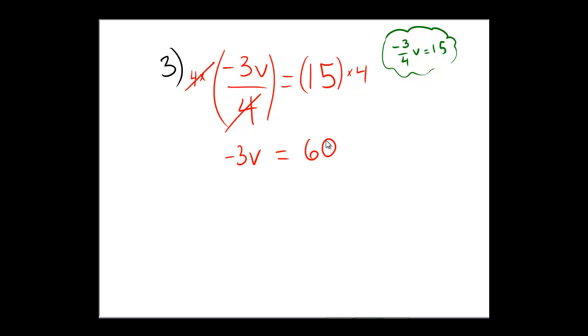Okay, now we have multiplication. How do we unwrap that present by the order of operations? That's right, it's division. So, I'm going to divide both sides by the same number, namely negative 3. Reducing on the left leaves me with v. 60 divided by negative 3 is negative 20. And that's the answer to this one.